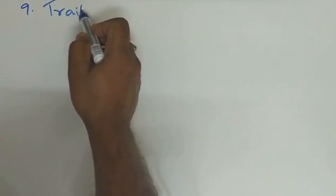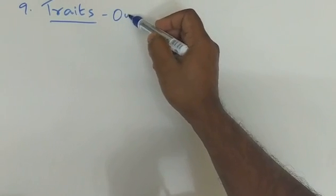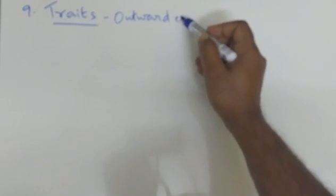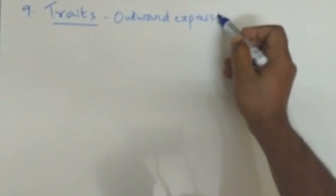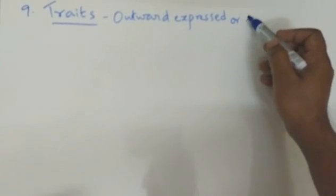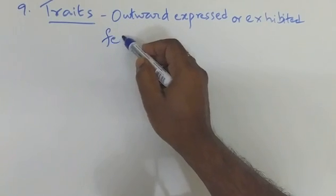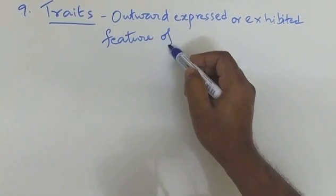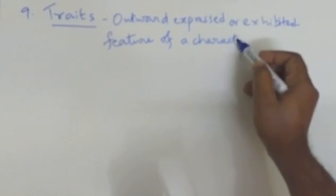A trait is the outward expressed — exhibited — feature of a character, and this is known as a trait.